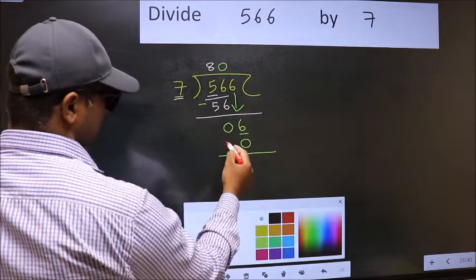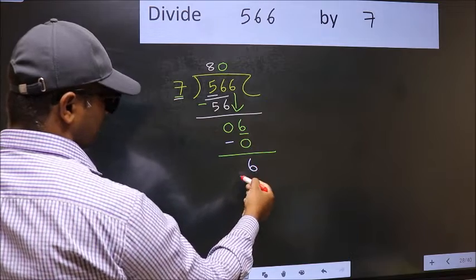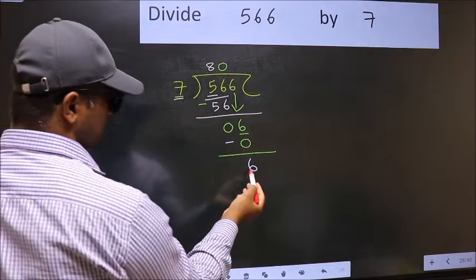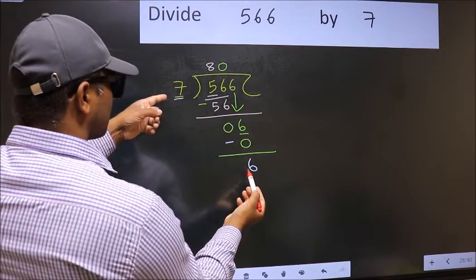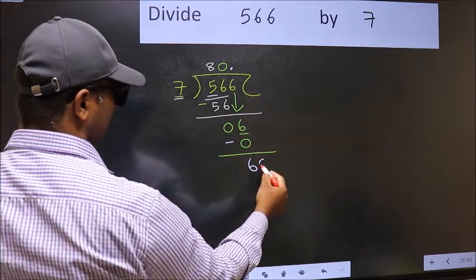Now you should subtract. 6 minus 0, 6. Over here, we did not bring any number down. And 6 is smaller than 7. So now you can put dot and take 0.